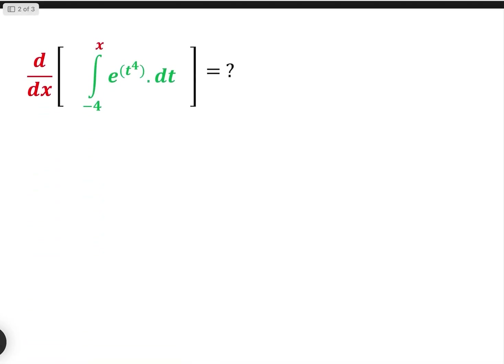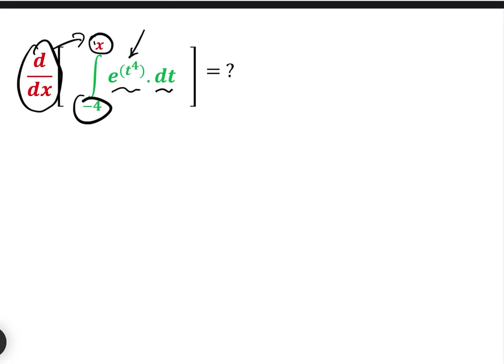This is a question I actually saw on a college entrance test. It's got all of the elements already: it's got the d/dx, it's got the integral between x and a constant, and it's got a function of t dt. So using our fundamental theorem of calculus, we can simply write the answer by replacing t with x. The answer is e to the power of x to the power of four — simply replacing that t with x. Et voilà, you will never see a simpler question than that.